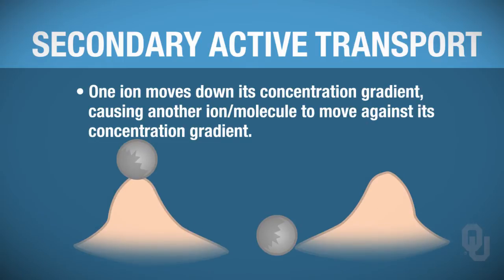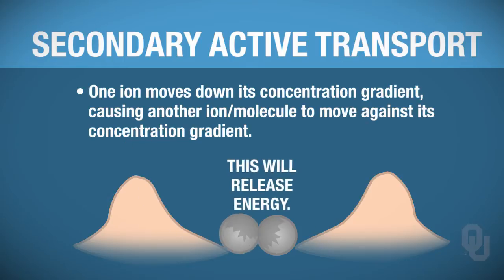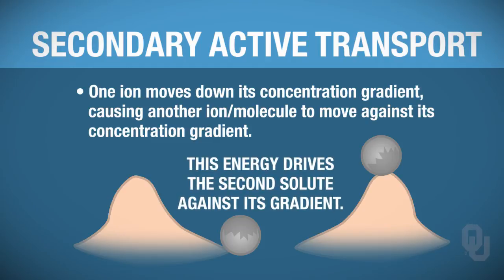Using the two-hill analogy: one solute is on top of the hill and a different solute is at the bottom. One ion—most commonly sodium—moves down its gradient, and when it moves down its gradient, that releases energy. This is indirect energy; we're not using ATP, we're not hydrolyzing ATP. It's the release of energy from this ion moving down its gradient that creates the energy to drive the other ion or molecule up its gradient.